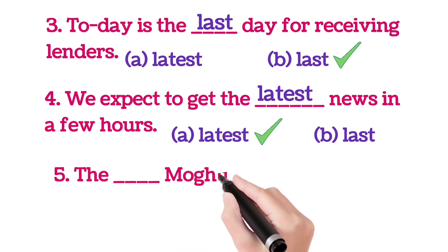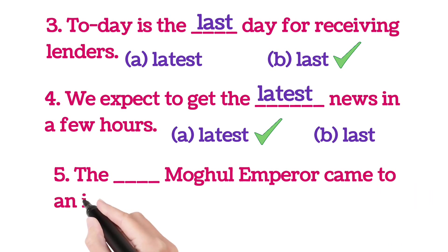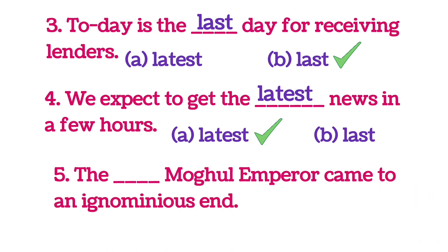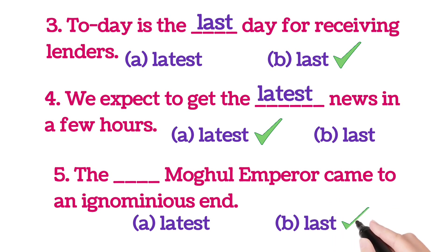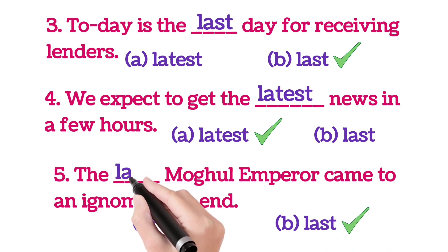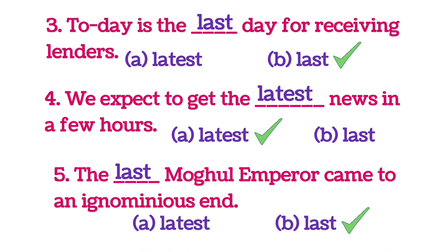'The ___ Mughal emperor came to an ignominious end.' A: latest, B: last. B is correct. The last Mughal emperor came to an ignominious end.